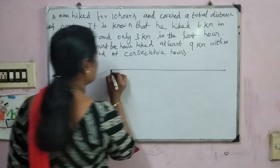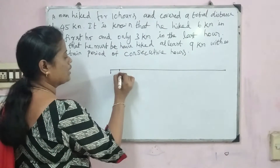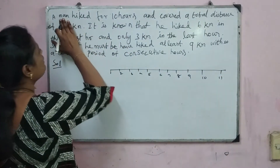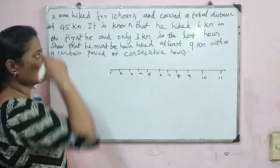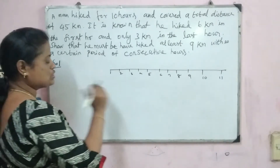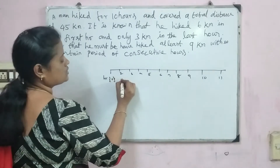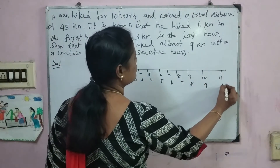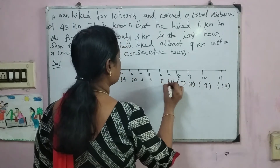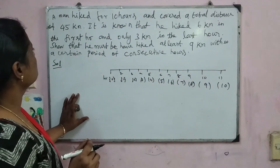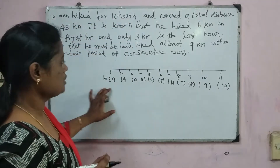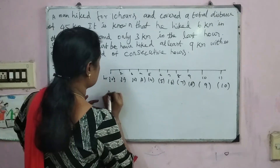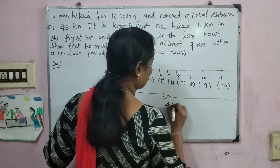Using the number line method, we plot the stages and hours from 0 to 10, representing the total 10 hours of hiking. The total distance covered is 45 km. From the given information, he hiked 6 km in the first hour (hour 0 to 1).